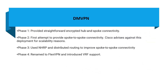Let's talk about DMVPN. There were technically three phases — Phase 1, Phase 2, and Phase 3 — and in the fourth phase they came up with a technology called Flex VPN, which was introduced with VRF support. In Phase 1 it is straightforward hub-to-spoke connectivity. In Phase 2 they tried to build dynamic tunnels from spoke to spoke. Scalability issues were resolved in Phase 3, and Phase 4 introduced IKEv2 along with VRF support.